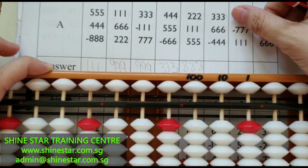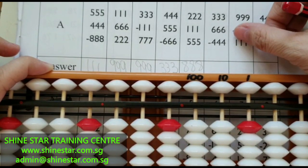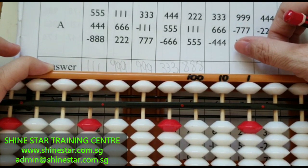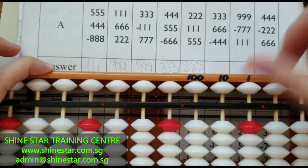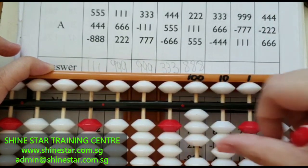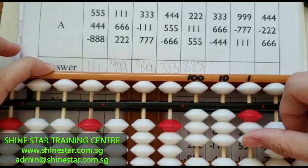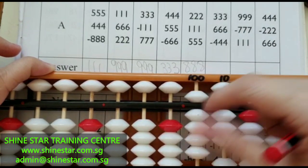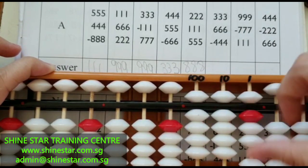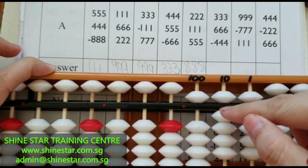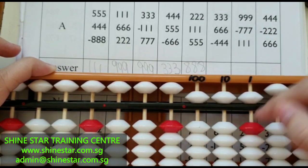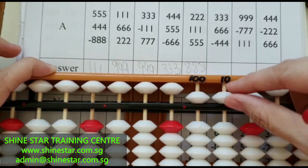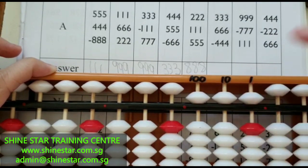333 plus 666 minus 444. The answer is 555.